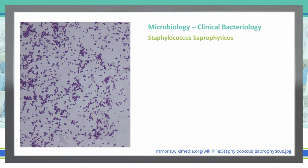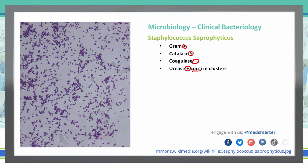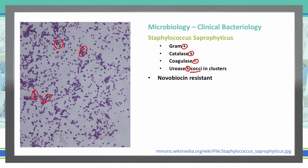Staphylococcus saprophyticus is a gram-positive, catalase-positive, coagulase-negative, and urease-positive cocci that forms in clusters. Comparing this to Staph epidermidis, it looks fairly similar because they're both clustering. The big main difference here is that Staph saprophyticus is novobiocin resistant, where Staph epidermidis is sensitive to novobiocin.